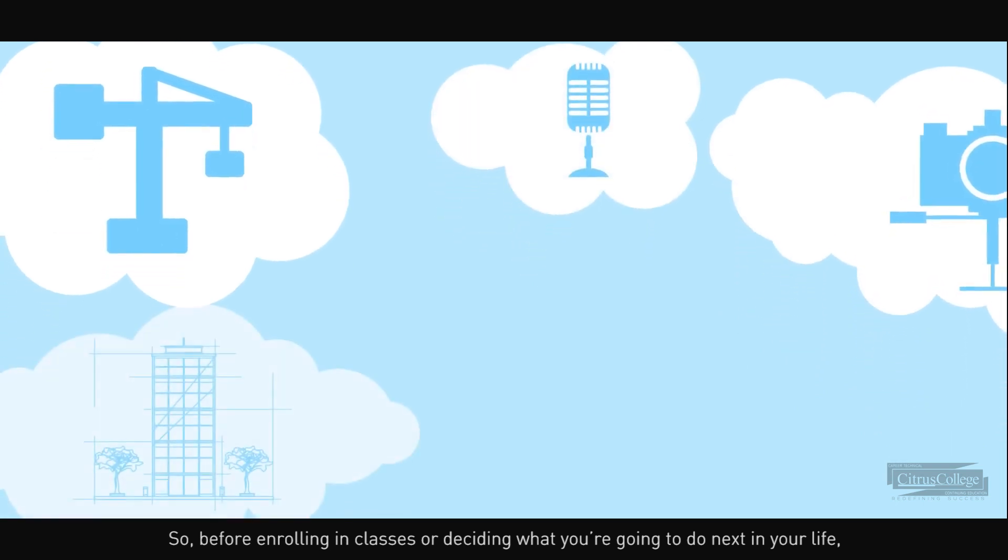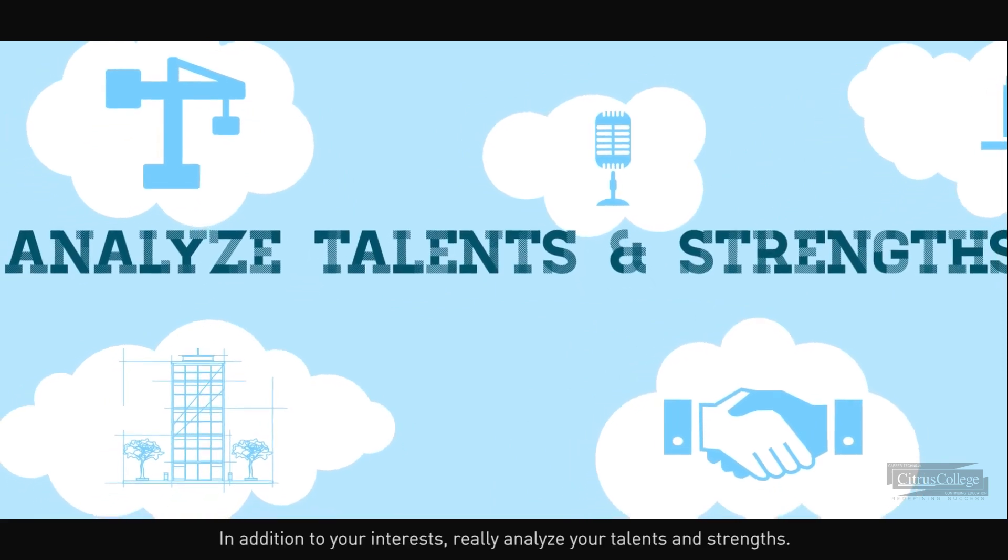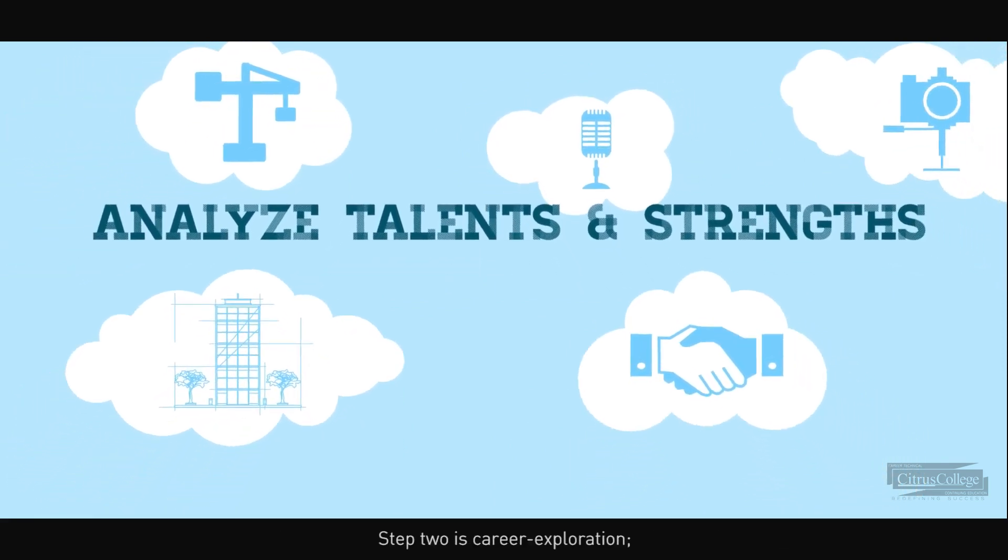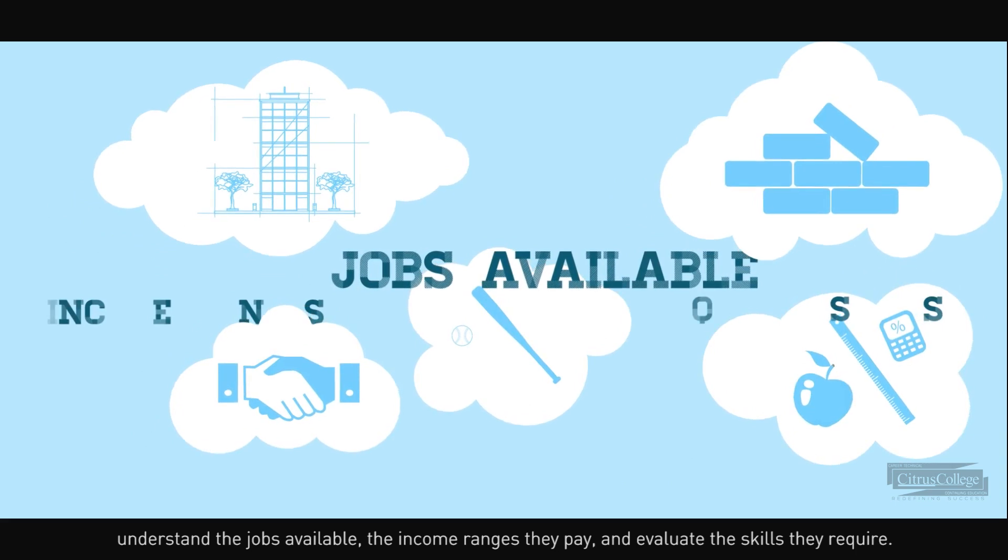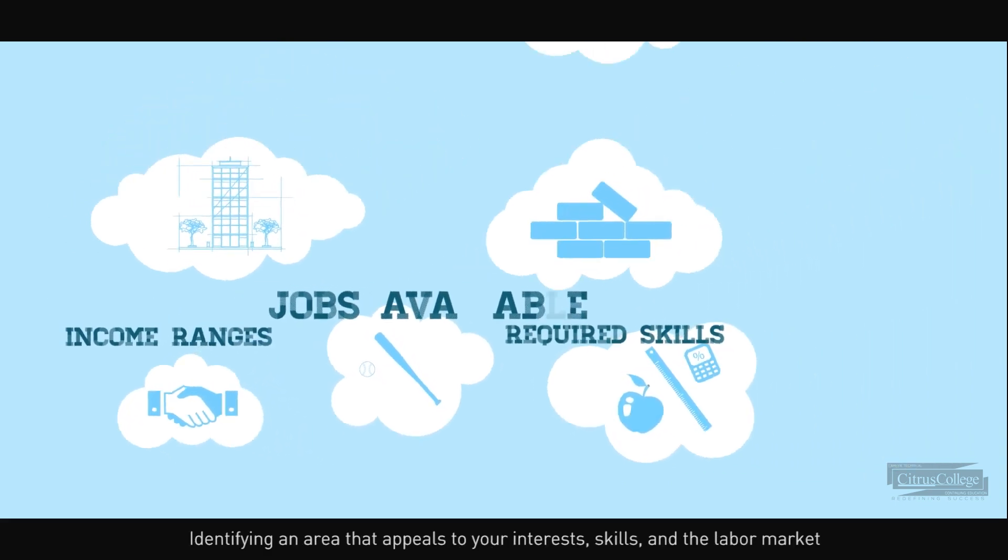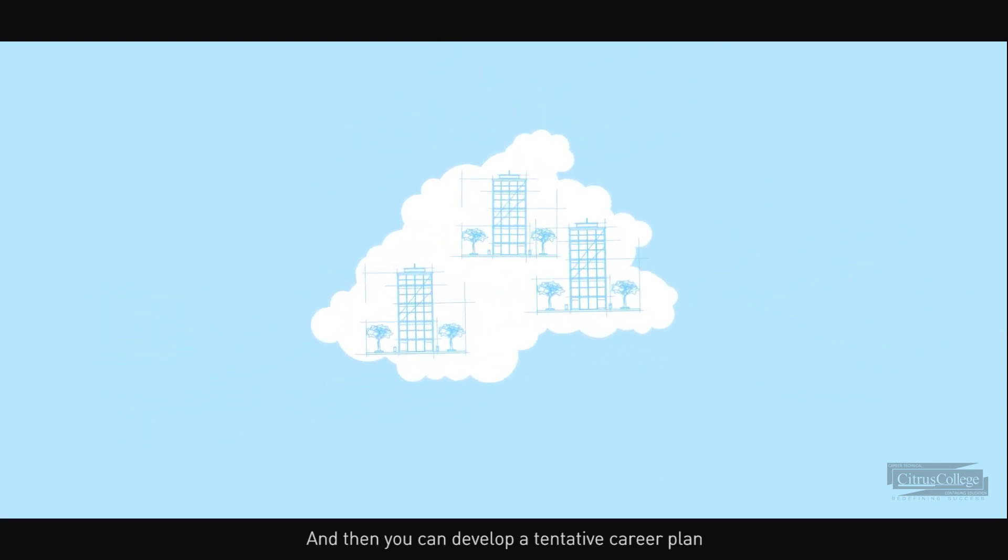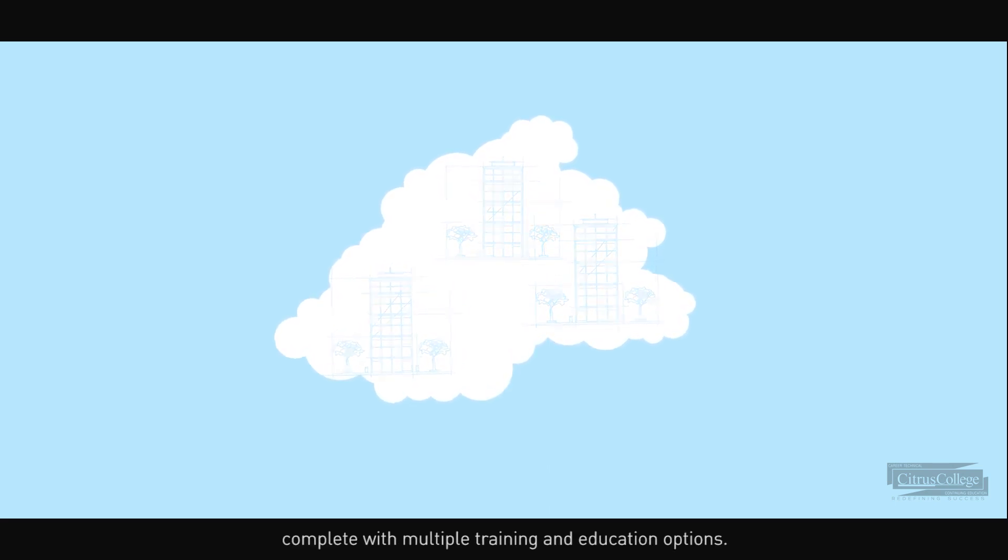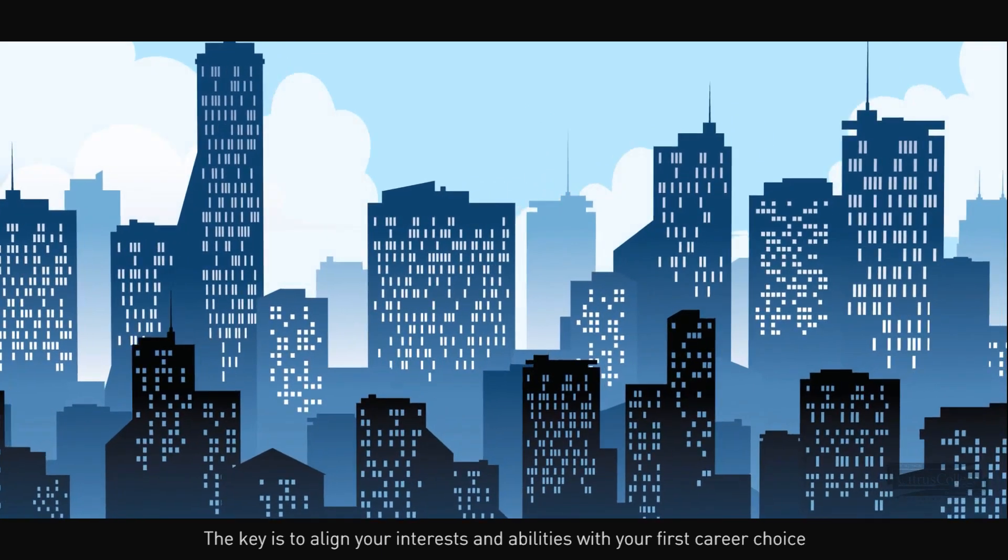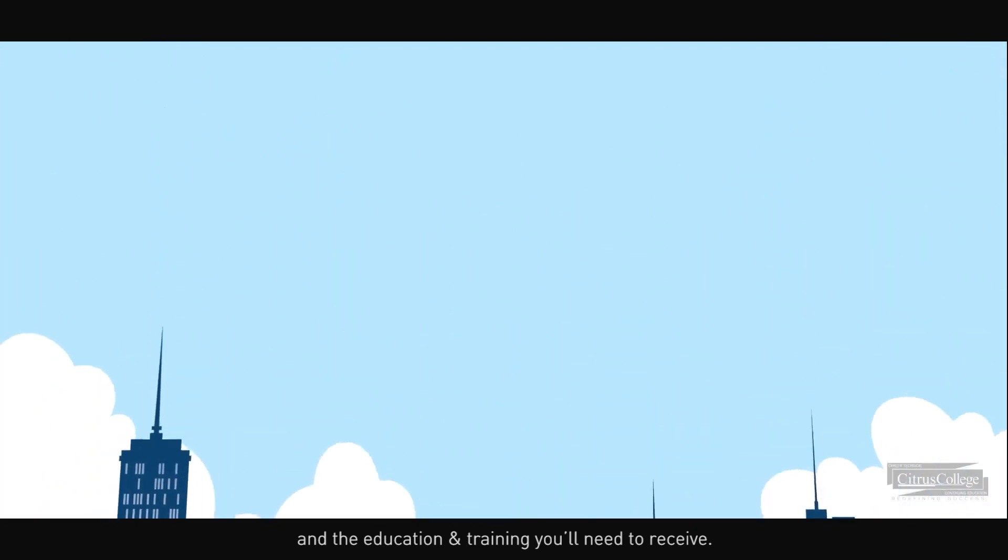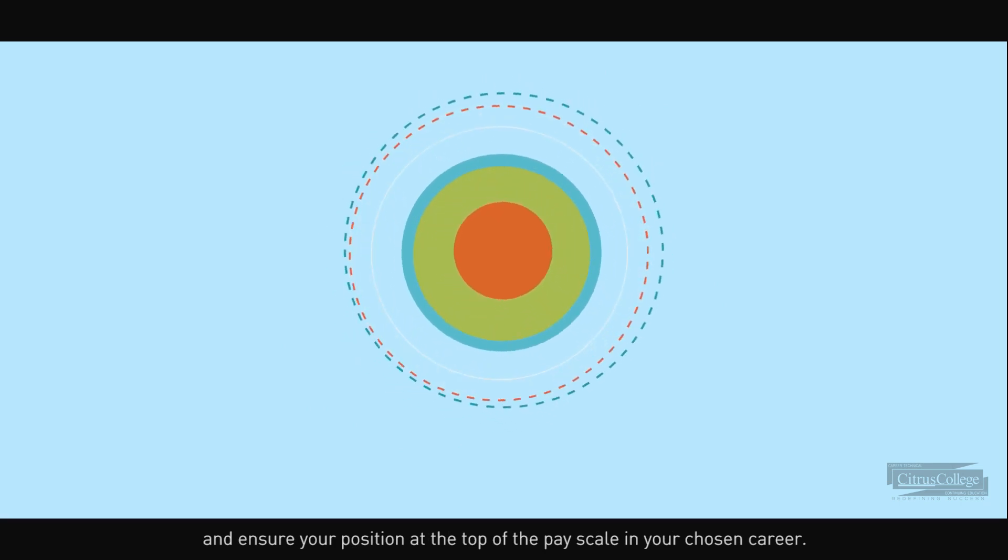So before enrolling in classes or deciding what you're going to do next in your life, step one is self-exploration. In addition to your interests, really analyze your talents and strengths. Step two is career exploration. Understand the jobs available, the income ranges they pay, and evaluate the skills they require. Identifying an area that appeals to your interests, skills, and the labor market may be your first career. And then you can develop a tentative career plan, complete with multiple training and education options. The key is to align your interests and abilities with your first career choice and the education and training you'll need to receive. This alignment will help bring your future into focus and ensure your position at the top of the pay scale in your chosen career.